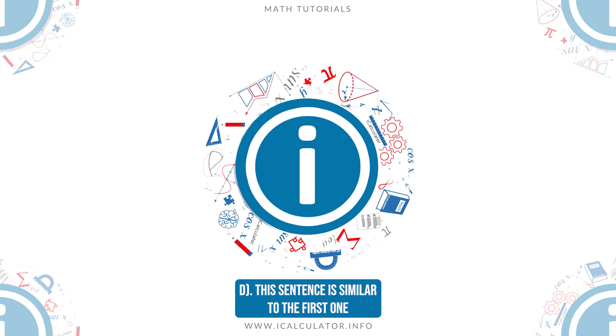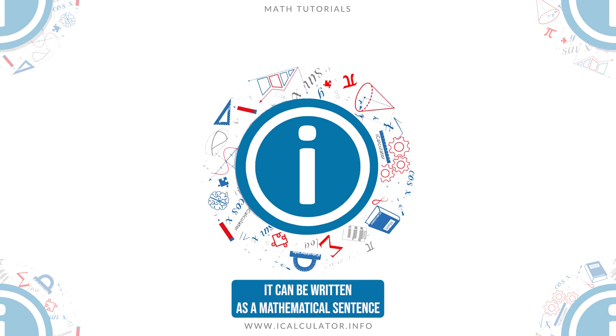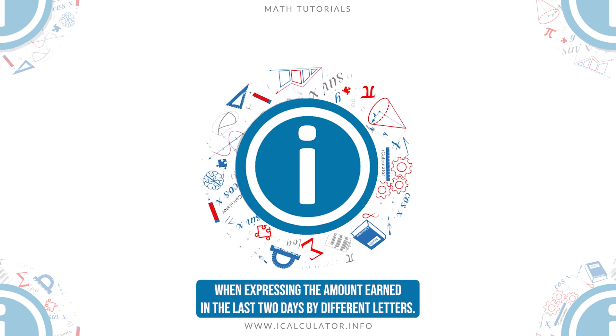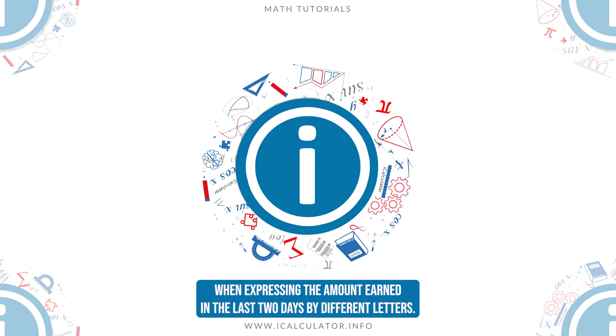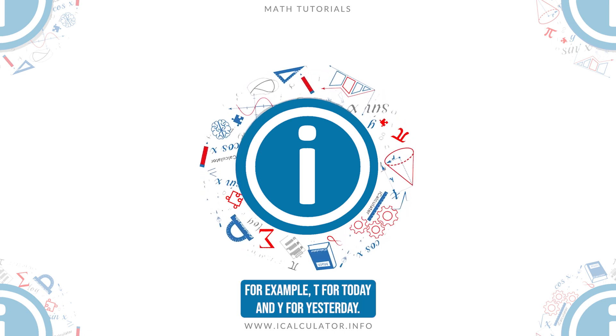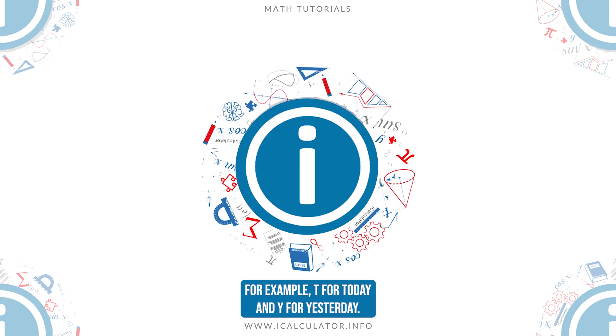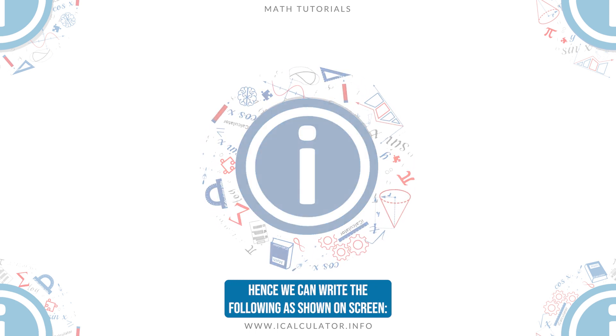D: This sentence is similar to the first one. It can be written as a mathematical sentence when expressing the amounts earned in the last two days by different letters. For example, T for today and Y for yesterday. Hence, we can write the following as shown on screen.